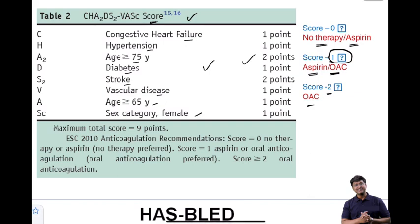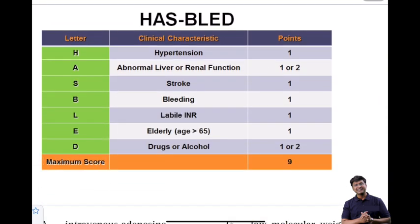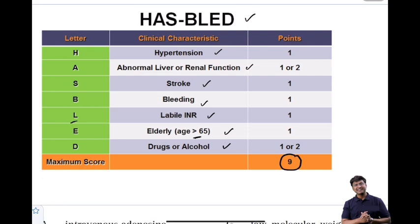If the individual's CHA₂DS₂-VASc score is two or more, oral anticoagulant must be given — either warfarin or NOACs (newer oral anticoagulant drugs). Once you start oral anticoagulation, the patient is at risk of bleeding. The risk of bleeding is assessed by the HAS-BLED score. Parameters include: H – hypertension, A – abnormal liver or renal function, S – stroke, B – bleeding, L – labile INR, E – elderly (over 65 years), D – drugs or alcohol. Total score is nine; a score above three indicates increased bleeding risk.